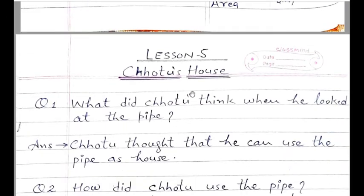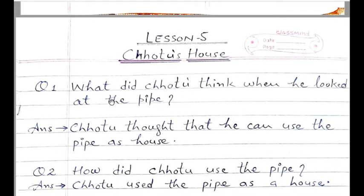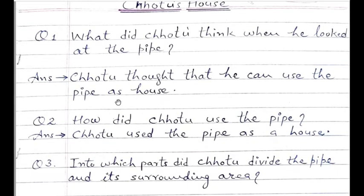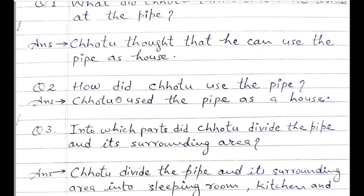Then it comes the question answer. इसके बाद question answer आता है — Chotu's House. Question number one: What did Chotu think when he looked at the pipe? छोटू ने क्या सोचा जब वो pipe को देखता है? Answer: Chotu thought that he can use the pipe as a house. छोटू सोचता है कि वो pipe को एक घर के रूप में प्रयोग कर सकता है.